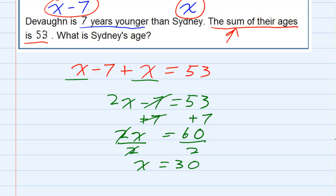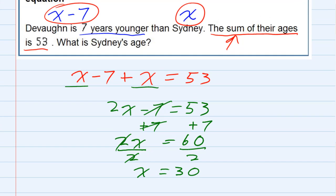Now before I call that my answer, I need to look back at the question and make sure that I'm really answering the question. We were told to find what Sydney's age is. And since I did call Sydney's age x, we found x is 30.